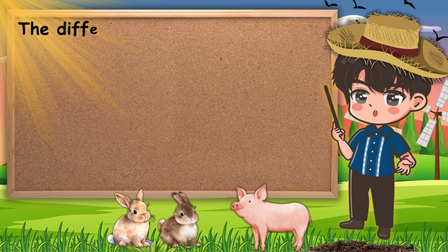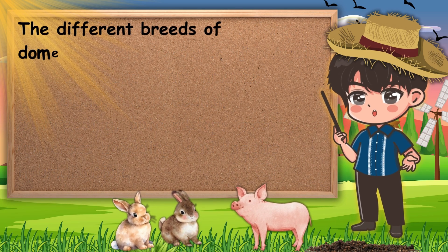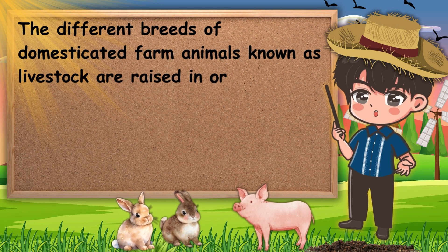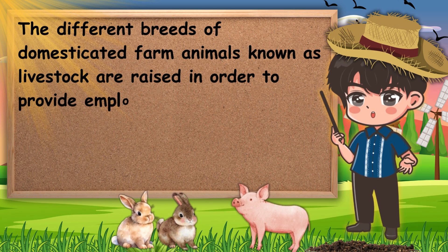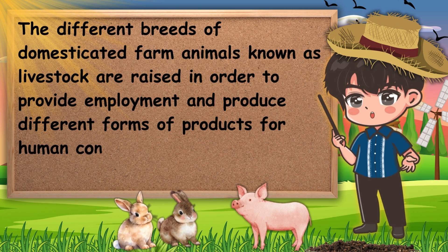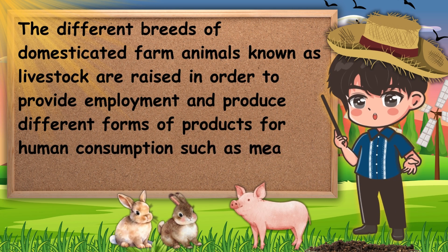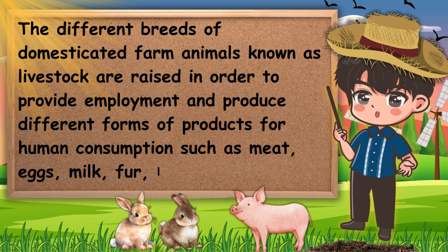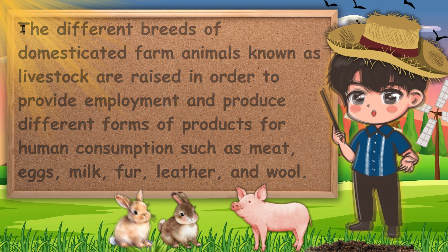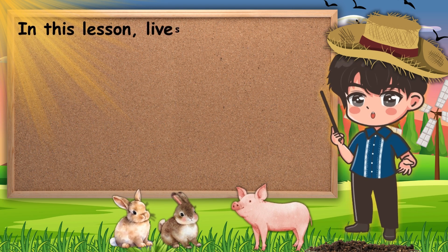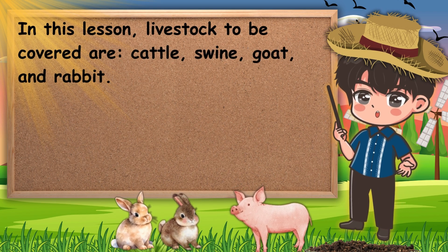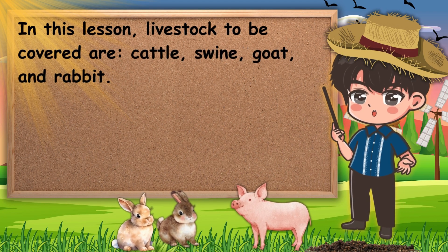The different breeds of domesticated farm animals known as livestock are raised in order to provide employment and produce different forms of products for human consumption such as meat, eggs, milk, fur, leather, and wool. In this lesson, livestock to be covered are cattle, swine, goat, and rabbit.